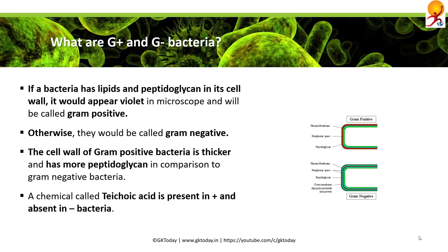A chemical called teichoic acid is present in gram positive bacteria but absent in gram negative bacteria.